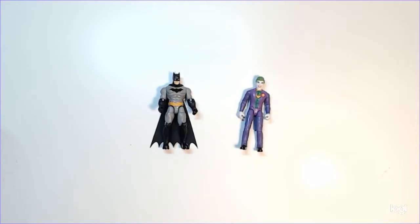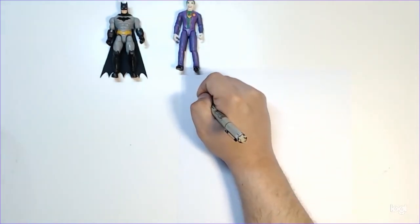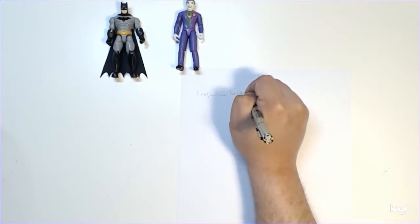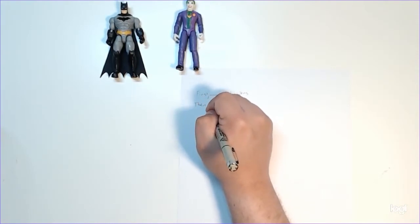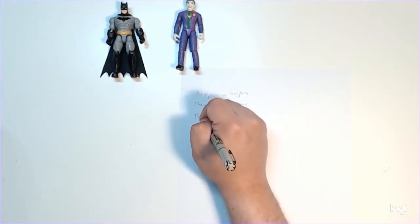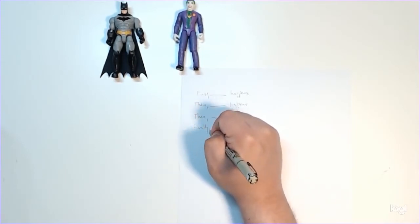So the first thing we need to do is figure out the timing of our animation, and to do that we want to start with a storyboard. Now some of you might have done this before, but for those that storyboarding is new to, you want to start off with something like: first blank happens, then blank happens, then blank happens, and finally blank happens.